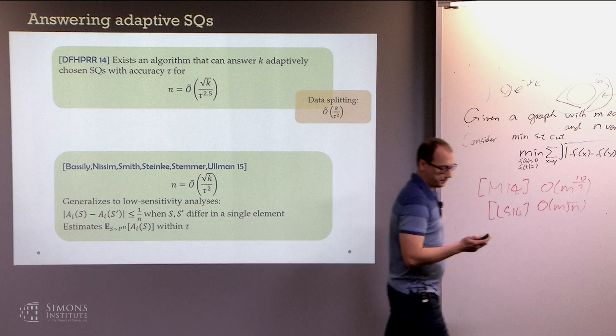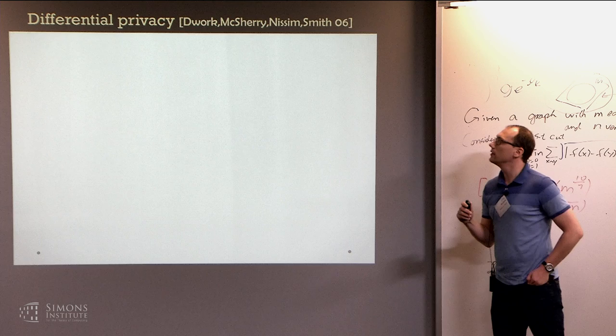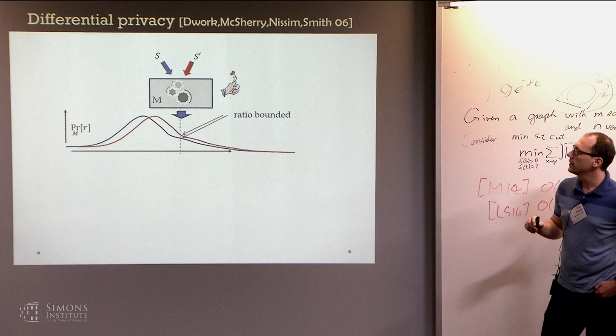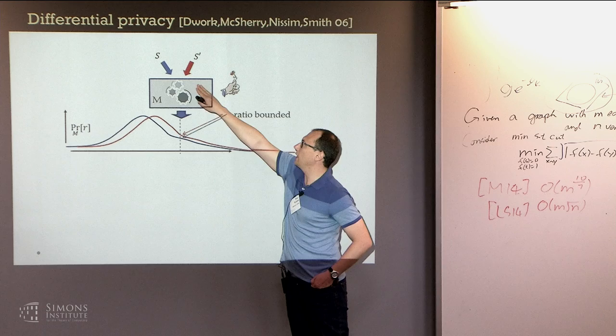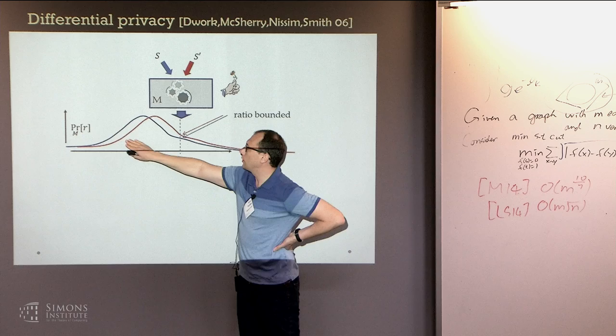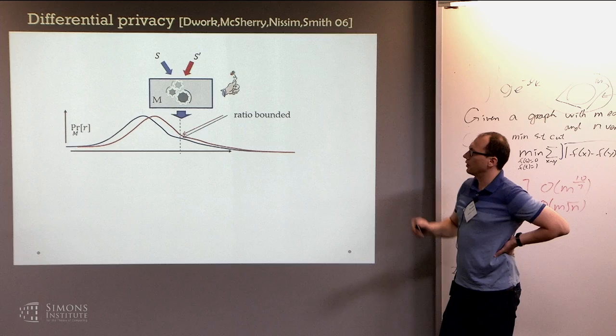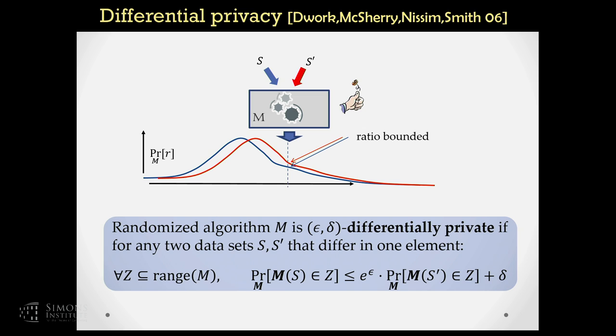Where do these algorithms come from? They rely on techniques developed in differential privacy. Differential privacy is a condition for a randomized algorithm that takes a dataset as input — a condition on its output distribution which roughly says that if you look at the output distributions on any two adjacent datasets, these distributions will be close: multiplicatively close almost everywhere, and possibly up to some small additive delta where they are not. It has two parameters: epsilon measuring the multiplicative factor and delta some additional additive factor.